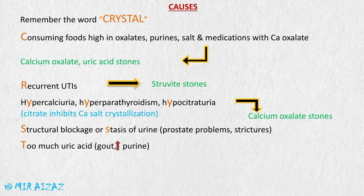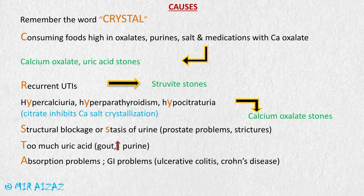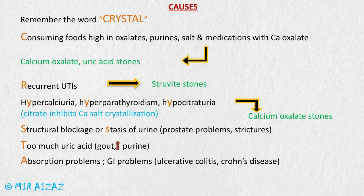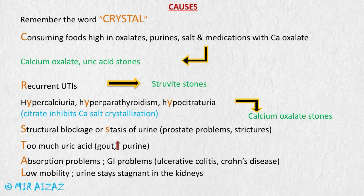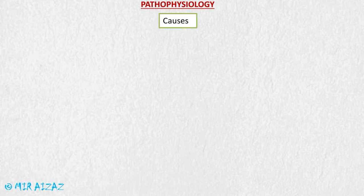T stands for too much uric acid, found in patients with gout or those with high purine intake. A stands for absorption problems, including gastrointestinal conditions like ulcerative colitis and Crohn's disease, which interfere with calcium and salt absorption and increase kidney stone risk. L stands for low mobility, because immobility makes urine stagnant in the kidneys, increasing the chances of salt crystallization and stone formation.